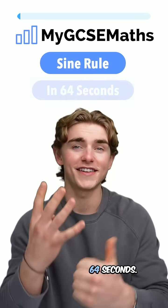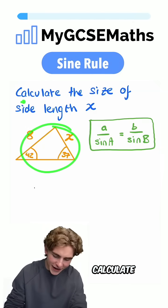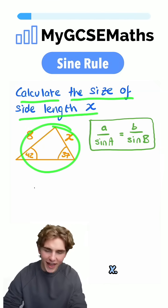GCSE Maths sine rule in 64 seconds. Let's go. Let's say we're given this triangle here and asked to calculate the size of side length x.